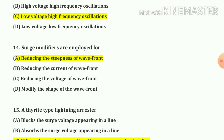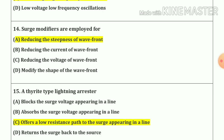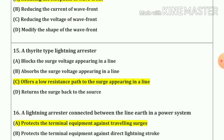Question number 14. Surge modifiers are employed for reducing the steepness of the wave front. Our answer is option A. Question number 15. A thyrite type lightning arrester offers a low resistance path to the surge appearing in a line. Our answer is option C.